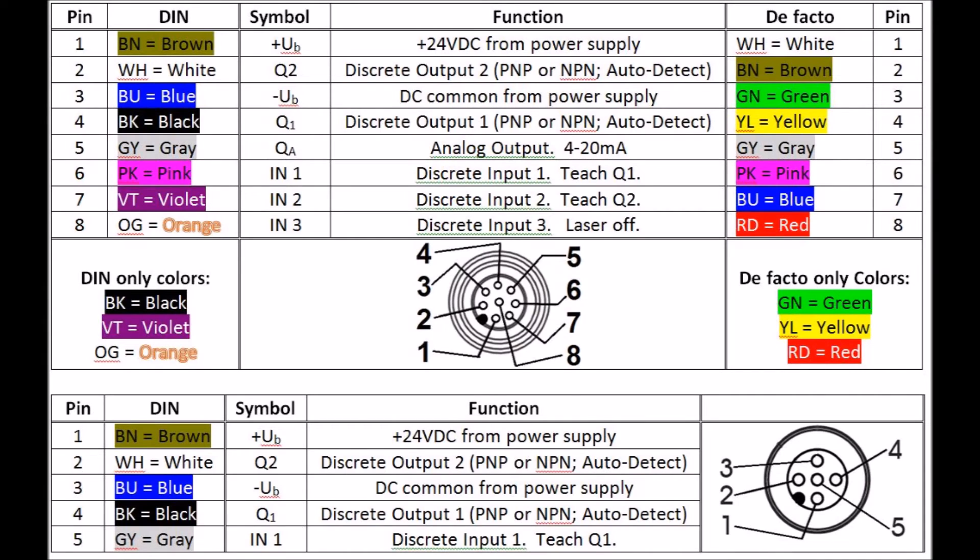Starting with this sensor, we're going to be using the new DIN color code standard for 8-pin M12 connectors. You can see that here on the left of this table, and on the right is a cross-reference to the old de facto standard that we have on all of our existing cables. There's a link to this table in the comments below.